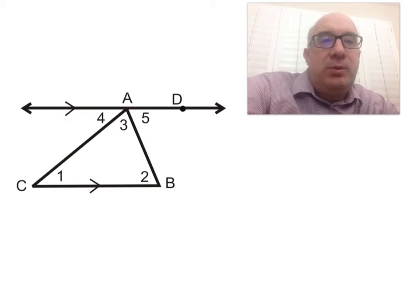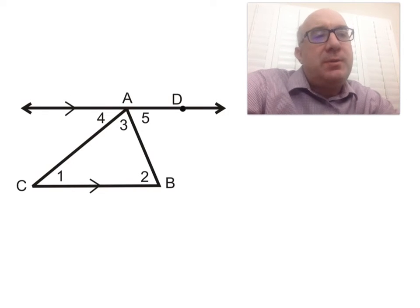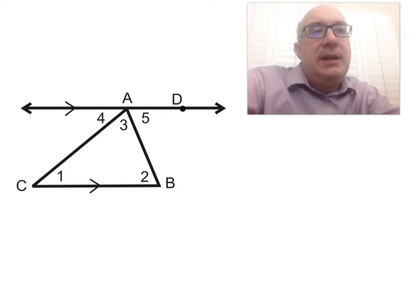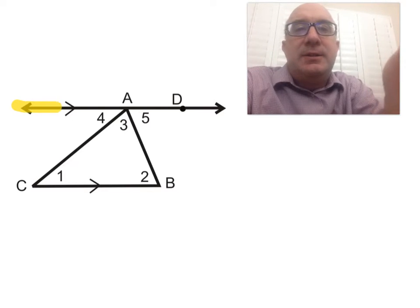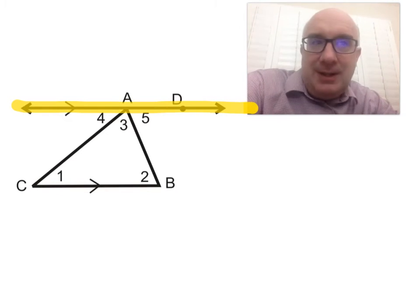The whole premise of proving that the three angles add up to 180 starts with a very foundational idea, and that is, you and I are going to add what's called an auxiliary line.